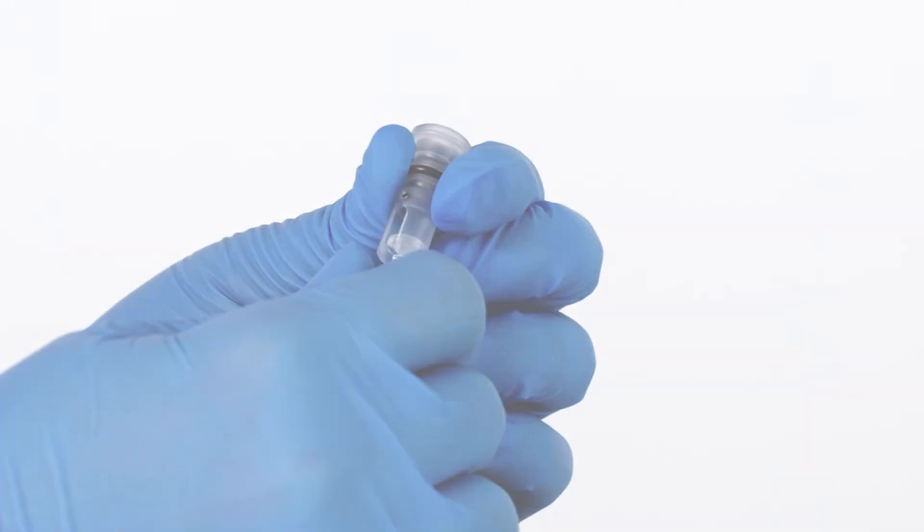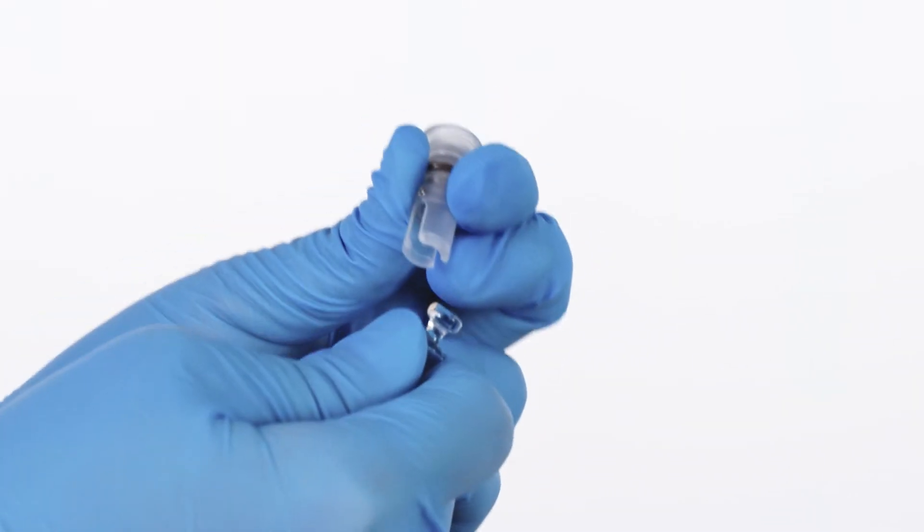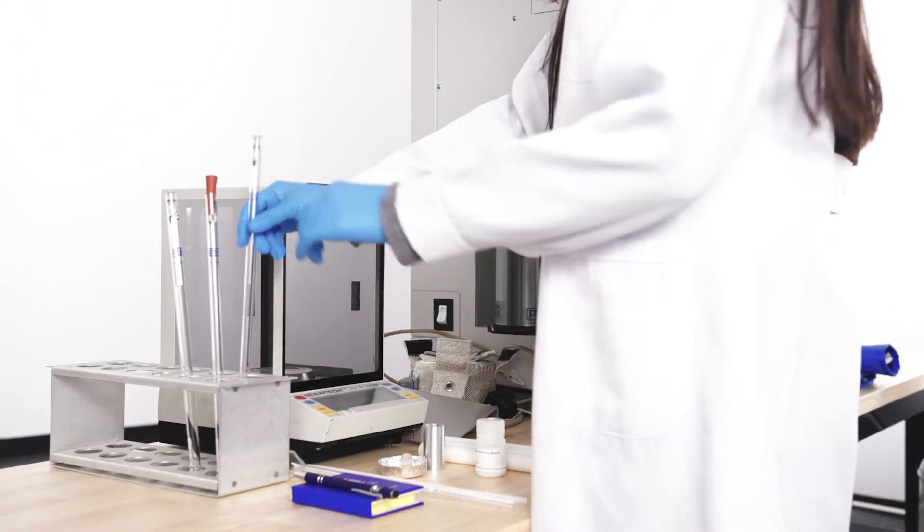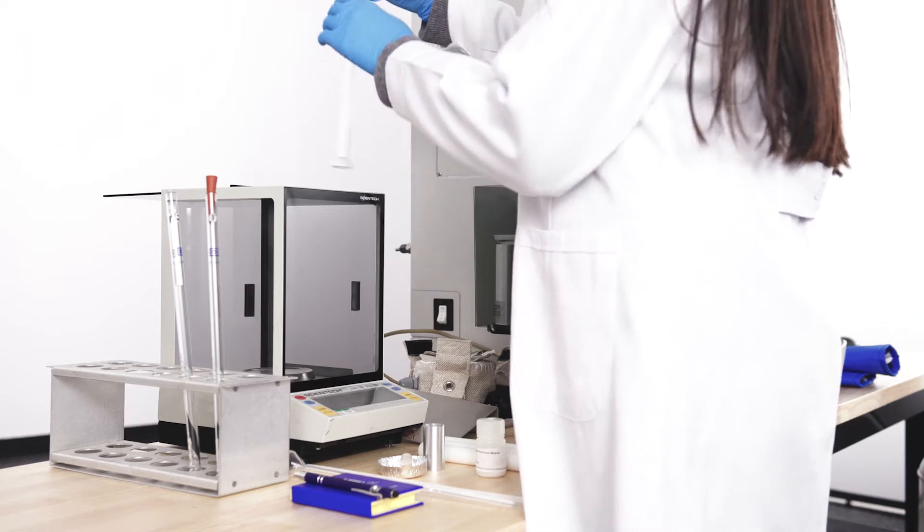Weigh the empty sample tube with either a check seal without the filler rod attached or a rubber stopper. Use your good lab practices to determine the mass and record.